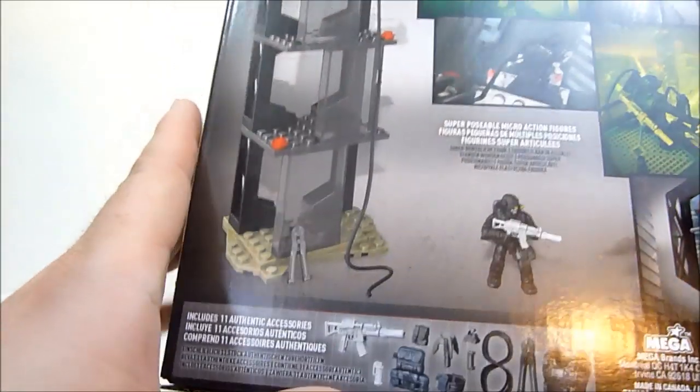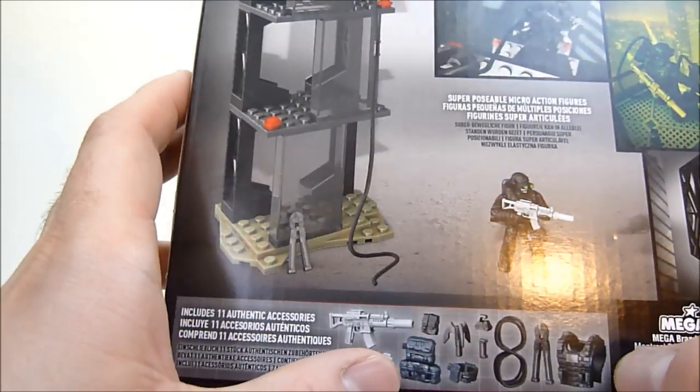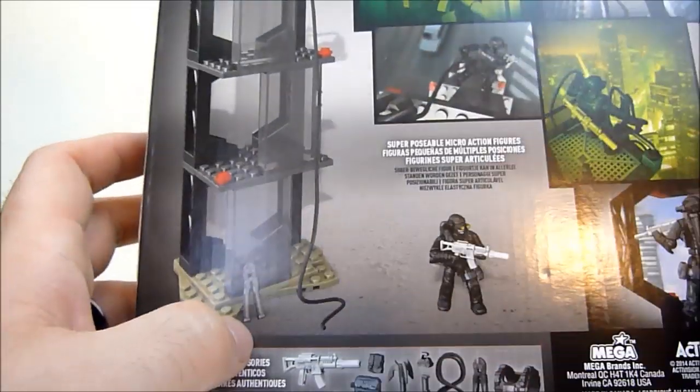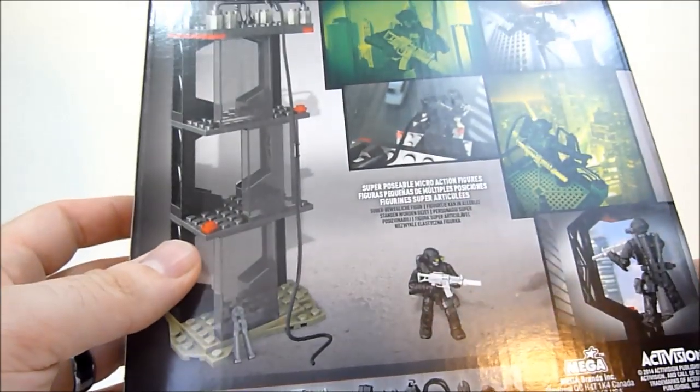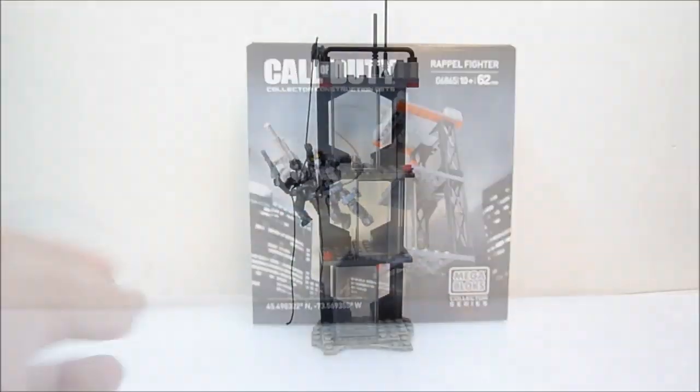So you get a bunch of accessories down here. It shows you all the stuff you get like grappling hooks and some rope and wire cutters and cool stuff like that. So I think we're just going to go ahead, get this guy put together and we will check it out in just a moment.